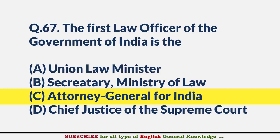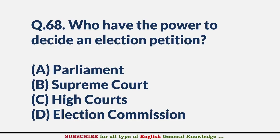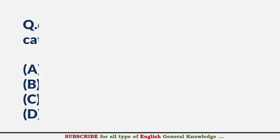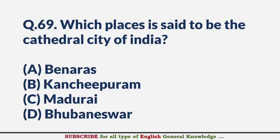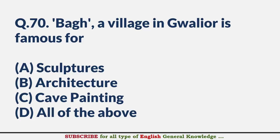Who has the power to decide an election petition? — Answer C: High Court. Which place is said to be the cathedral city of India? — Answer B: Bhubaneswar. A village in Gwalior is famous for? — Answer C: Cave Painting.